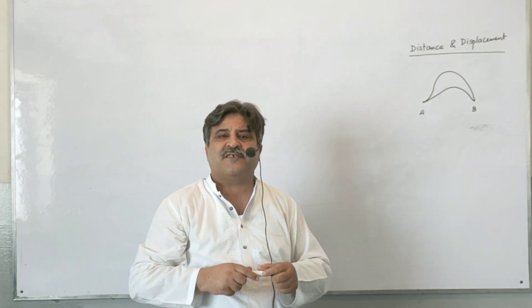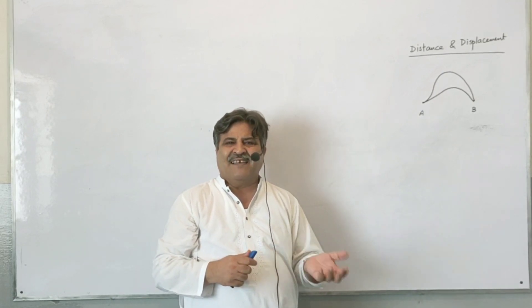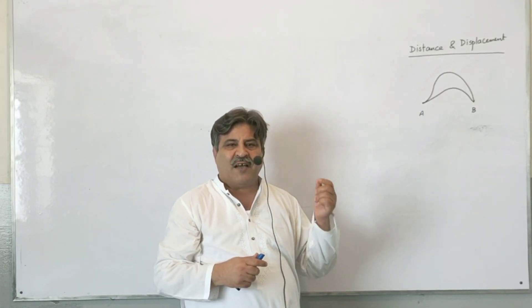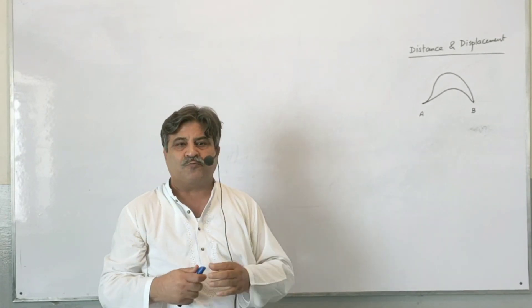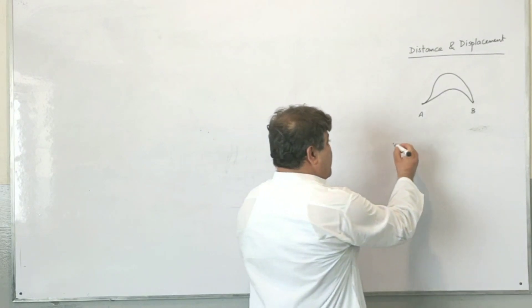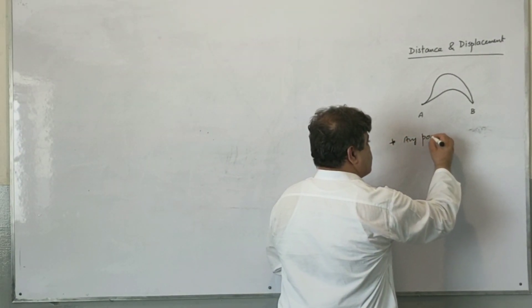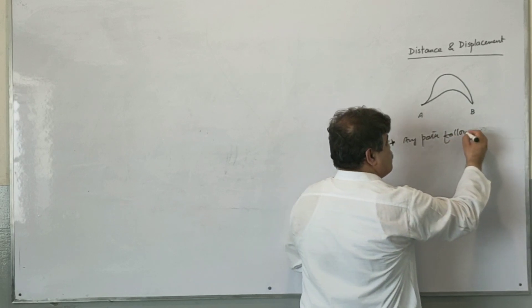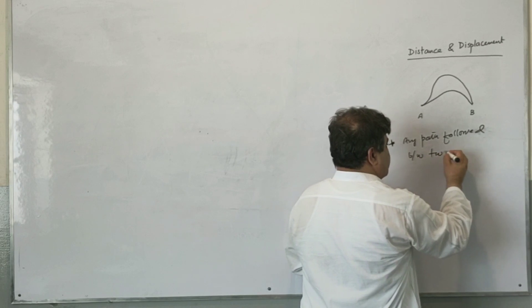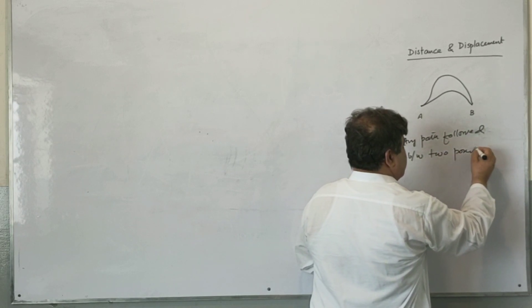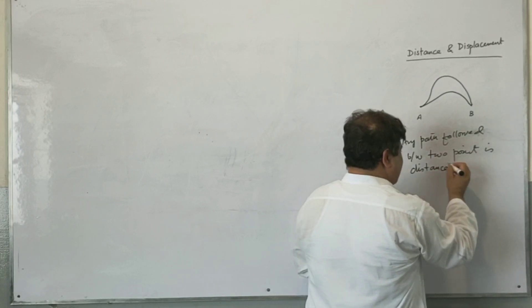For distance, there is a term in physics called scalar. You have to keep in mind that it has got no direction. Any path followed between two points is distance. This is called distance.